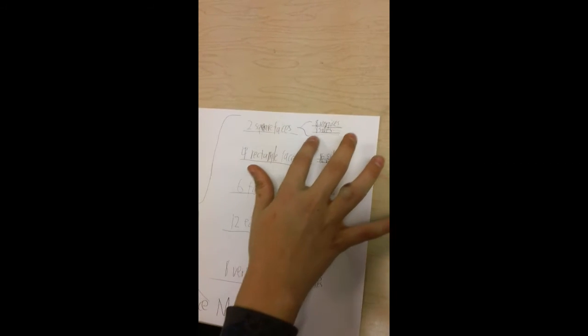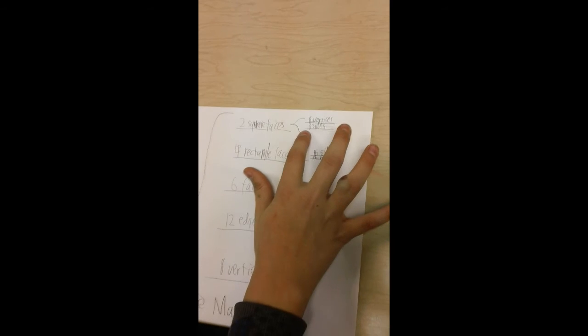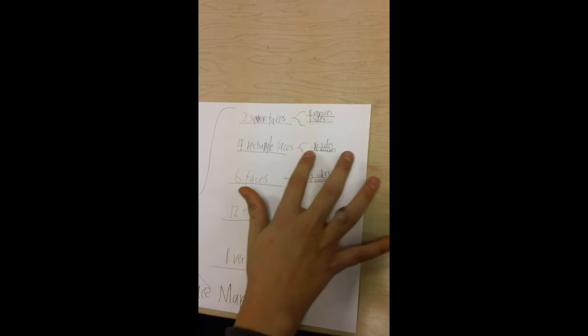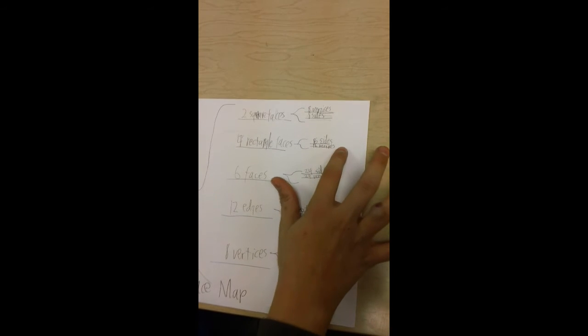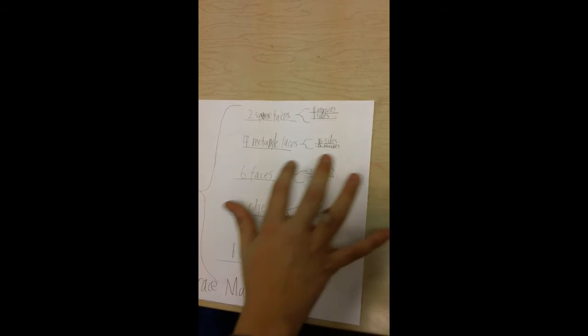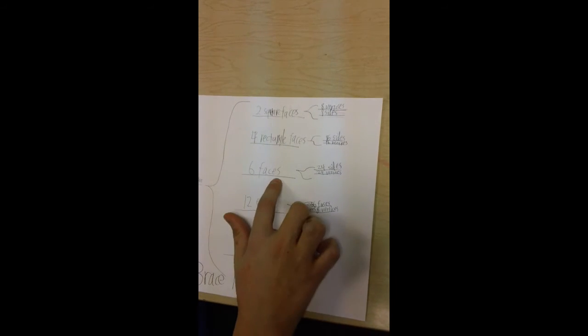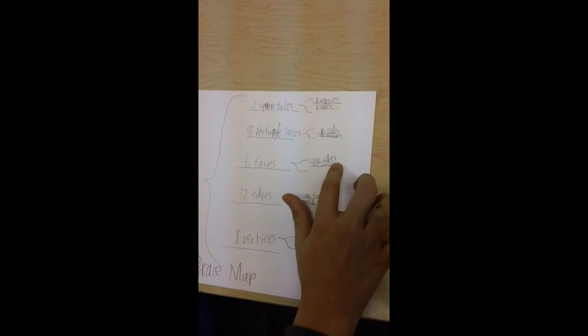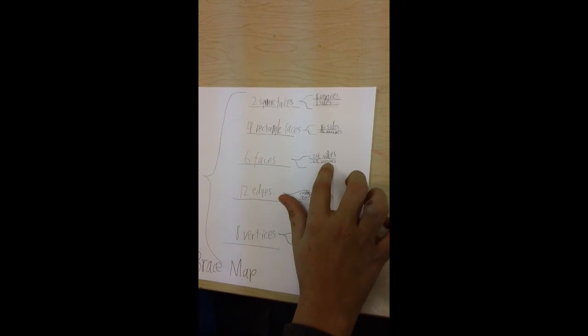The two square faces had eight vertices and eight sides together. The four rectangular faces had sixteen sides and sixteen vertices. The faces had 24 sides and 24 vertices.